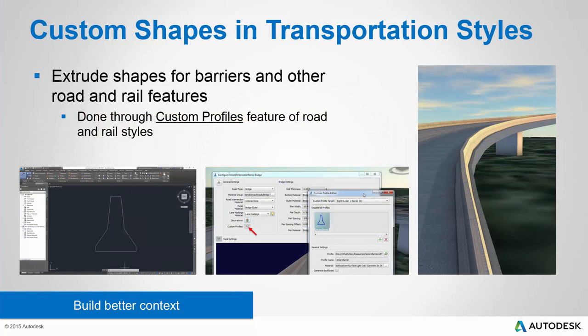Let's talk about custom shapes in your transportation styles. It means you can take a shape that you've created in an Autodesk product like Civil 3D or AutoCAD, export that as an SDF file, and then extrude that shape along your road or rail style in InfraWorks 360. You use the custom profiles option to extrude that shape along the path of the road. I've used the example of a Jersey Barrier to create a nice smooth Jersey Barrier component to my road style. The advantages are that it gives you a much smoother effect because you're extruding along a continuous path rather than inserting blocks of 3D models along the side of the road. It also gives you the flexibility to draw any shape you want, allowing you to create just about anything for your road, rail, or whatever linear feature you happen to be designing in InfraWorks 360.